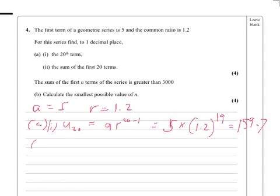Part 2 in this question, the sum of the first 20 terms equals 5 times 1 minus 1.2 to the power 20.